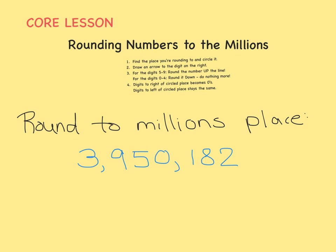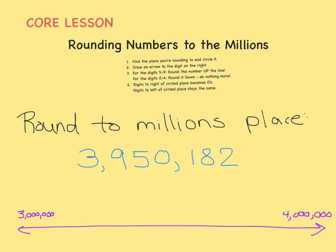Let's round 3,950,182 to the nearest millions place. That just means we're trying to figure out which millions it's closer to — 3 million or 4 million. Find the place you're rounding to and circle that digit. So we're rounding to the millions place, so we'll circle the 3.